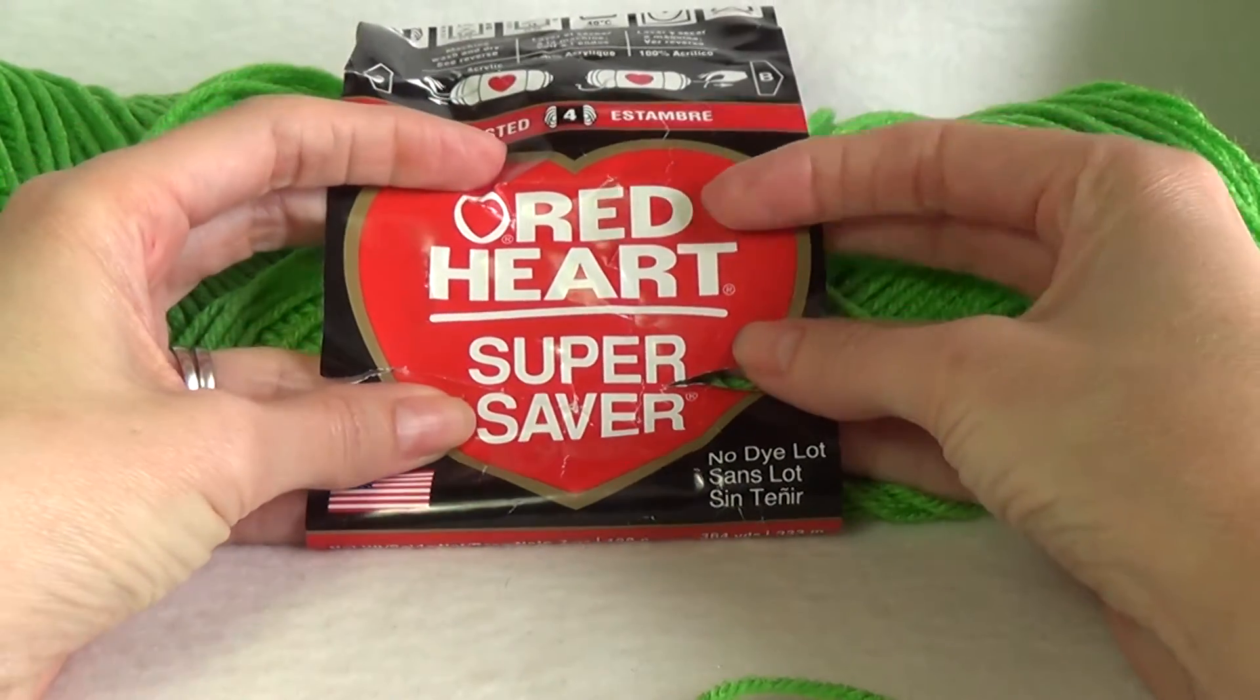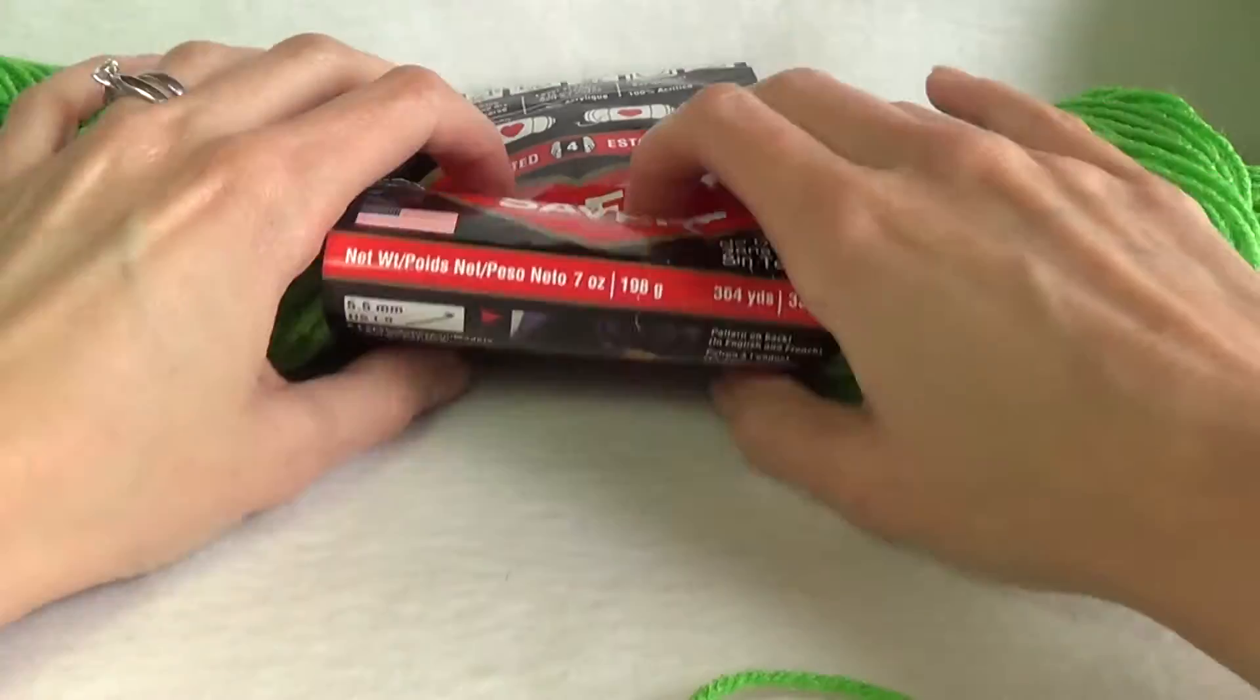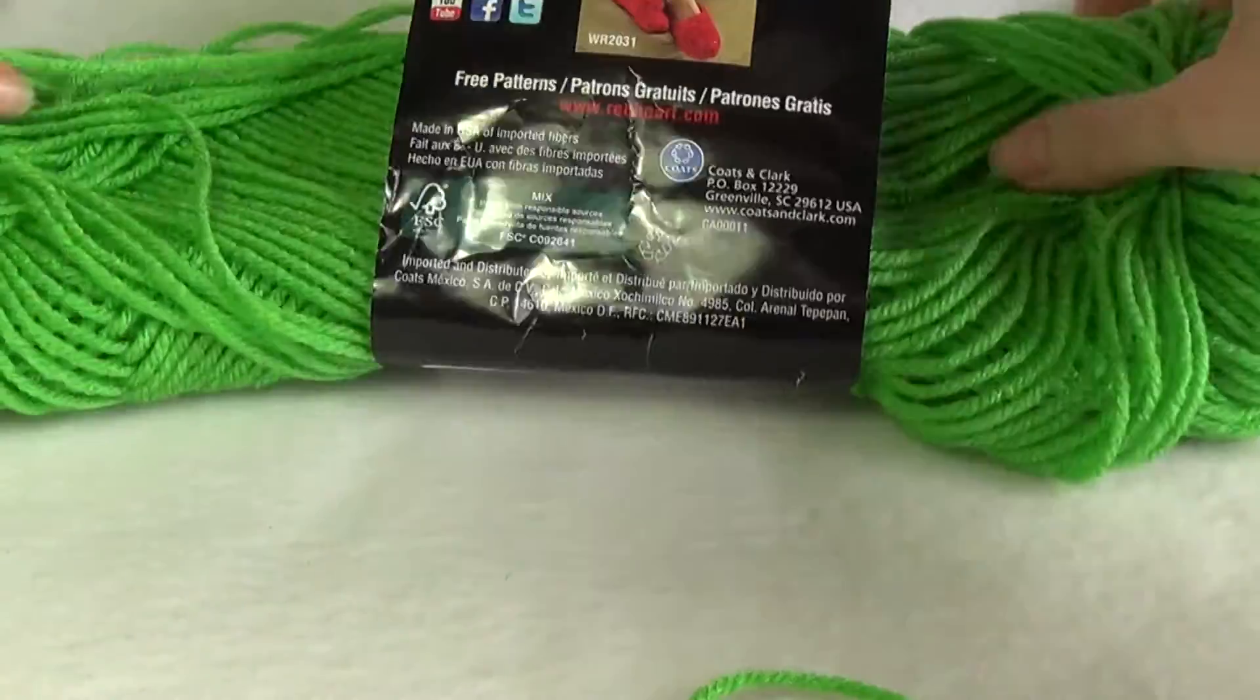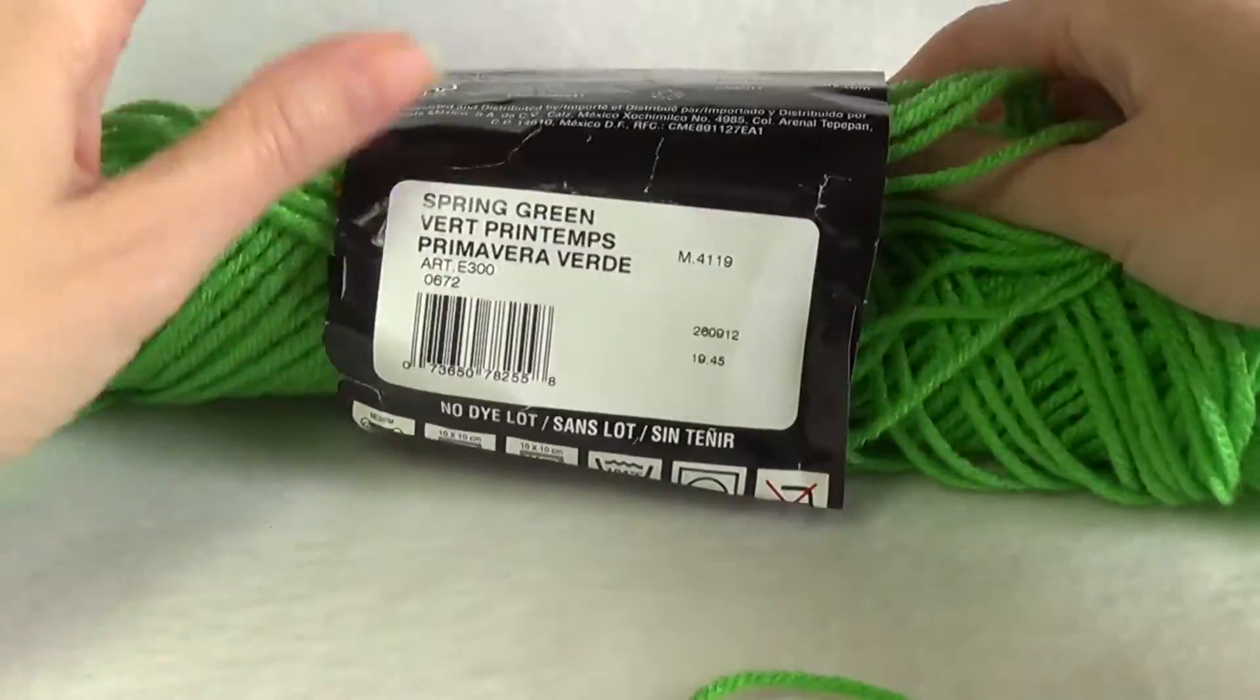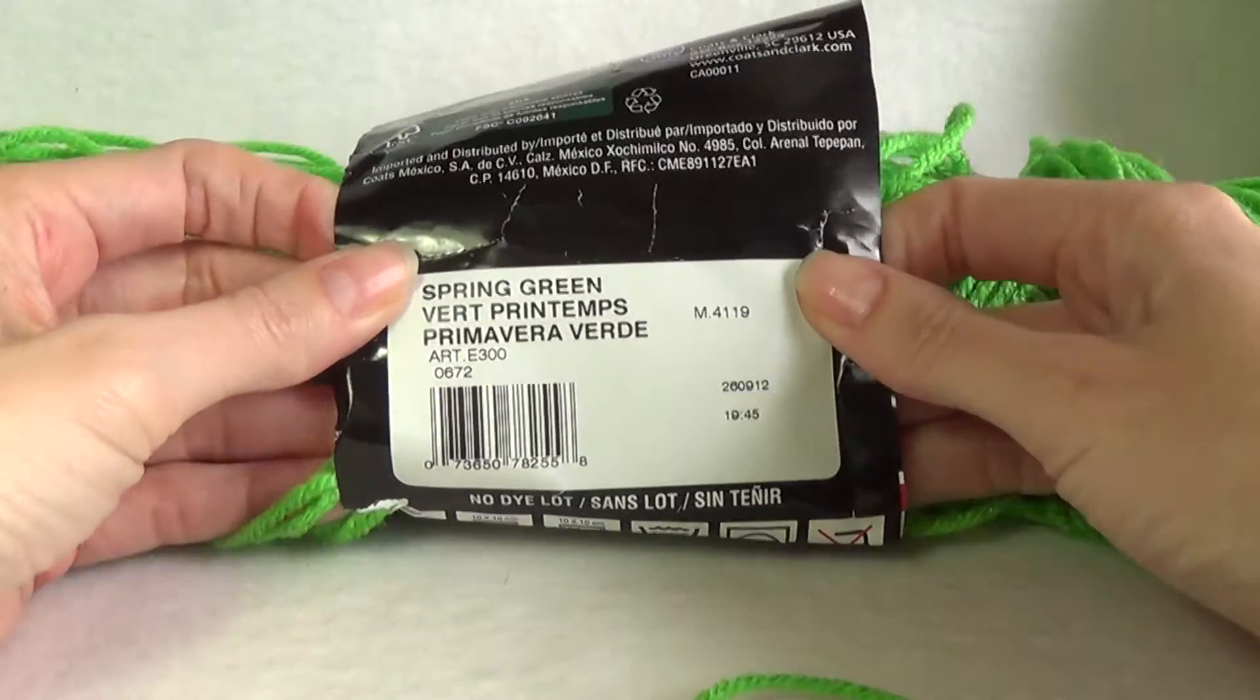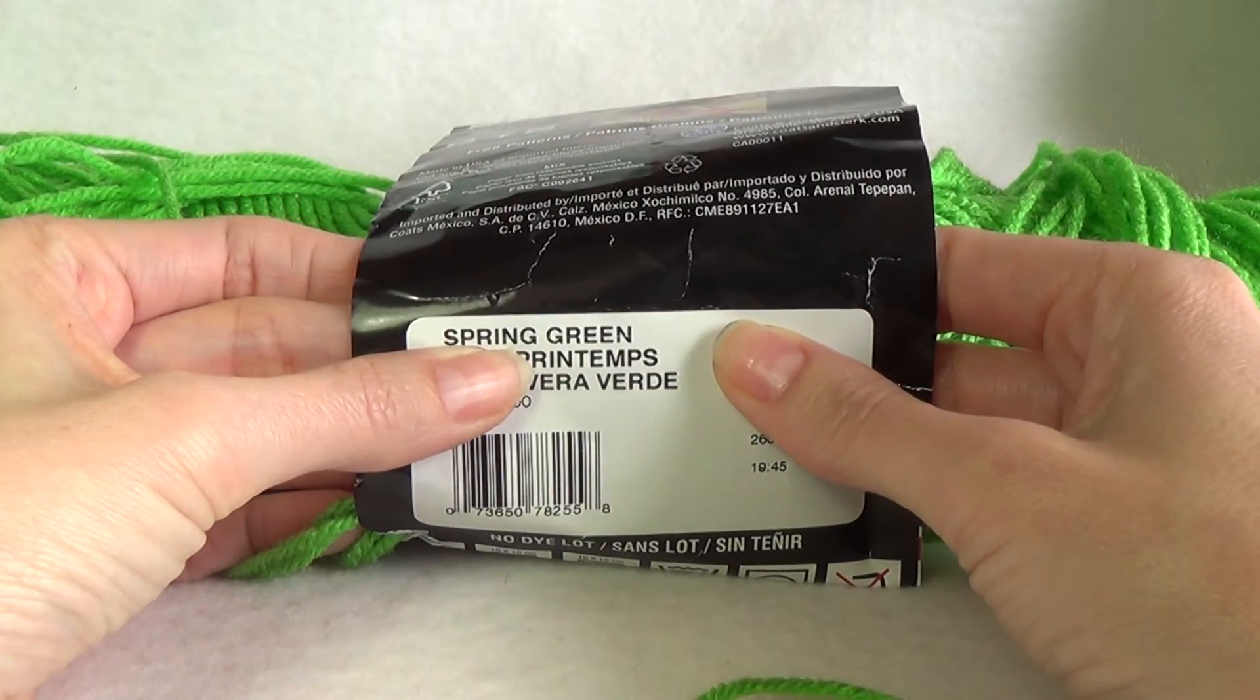In today's video we're going to use the Red Heart Super Saver. You have to excuse the condition of that label but it's scraps as you can see it's not a full ball, and we're using the color spring green. So you won't need much yarn for this project at all. It's great to use up scrap amounts of yarn.